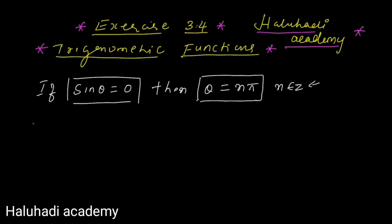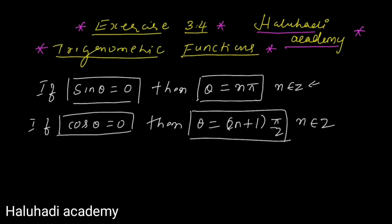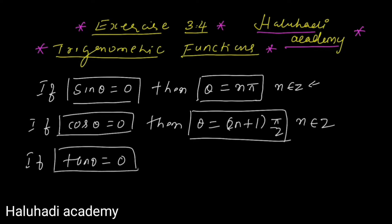The second proof: if cos θ equals zero, then θ equals (2n + 1) into π by 2, where n belongs to Z. So cos θ equal to zero gives θ equal to (2n + 1) into π by 2.